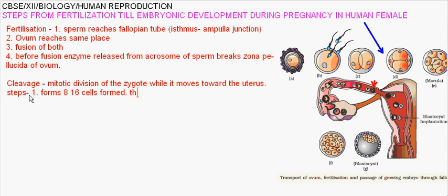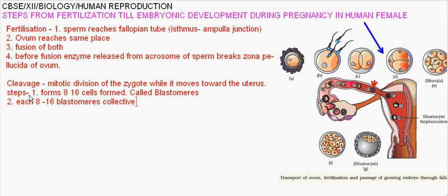Each 8 to 16 blastomeres collectively are called morula. The morula further divides and forms blastocysts.